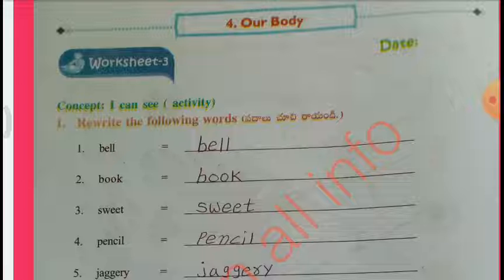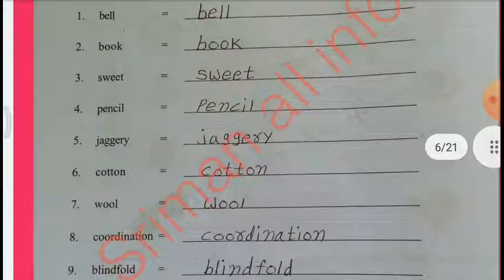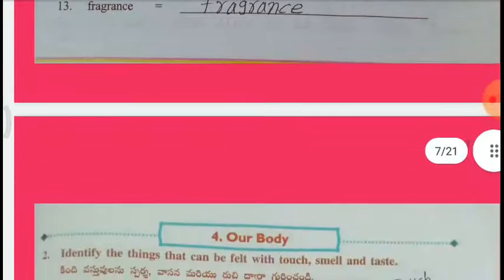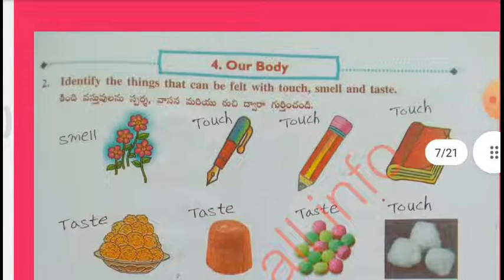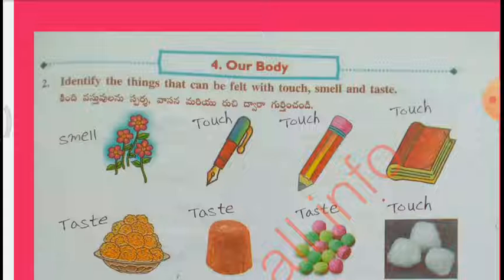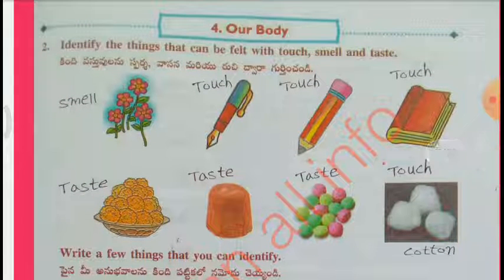Worksheet 3, Concept: I can see. Rerate the following words: Bell, Book, Sweet, Pencil, Jaggery, Cotton Wool, Coordination, Blindfold, Taste, Smell, Touch, Fragrance. Identify the things that can be felt with touch, smell and taste. Flowers — Smell. Pen — Touch. Pencil — Touch. Book — Touch.